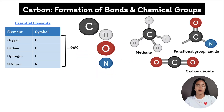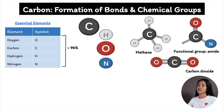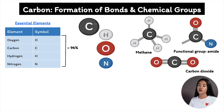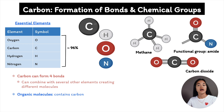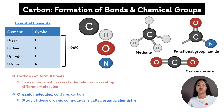In this video we're going to cover how carbon forms four covalent bonds with other atoms, which leads to molecular diversity. We're going to break down hydrocarbons, isomers, and important chemical groups. There are four elements that account for approximately 90 percent of the total dry mass of chemical elements found in human cells: carbon, oxygen, hydrogen, and nitrogen. The most abundant element is carbon. Molecules that contain carbon are called organic molecules, and the study of these organic compounds is called organic chemistry.